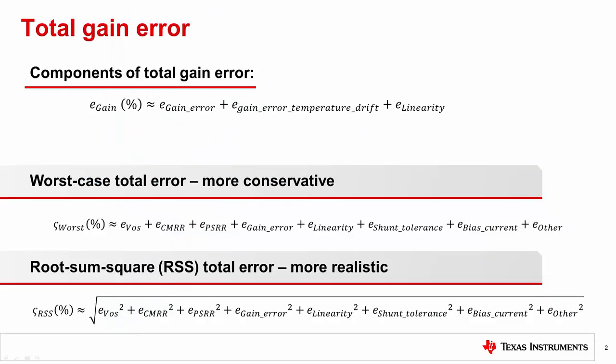Total gain error includes the device's internal gain error, the device's gain drift with temperature, and device linearity. Technically, the shunt resistor tolerance also contributes to the system gain error, but this video will only focus on the device's gain error.